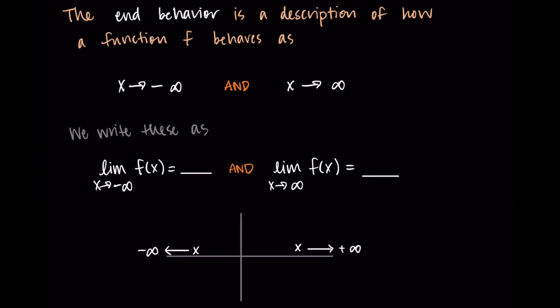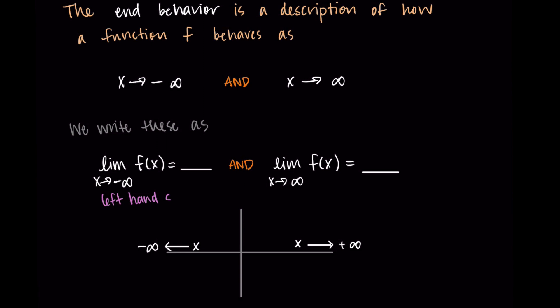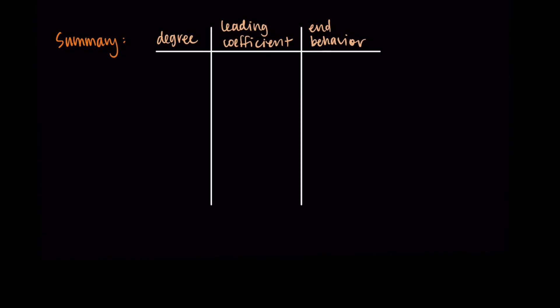On our graph, x approaches negative infinity on the left-hand side — that's as our input values approach negative infinity. Approaching positive infinity is the right-hand side, so as we go to the right, we're describing what happens to the function in that direction. This is general, so let me summarize our conclusions. We're going to make conclusions about polynomial functions based on their degree and their leading coefficient, which alone is enough to tell us something about end behavior.